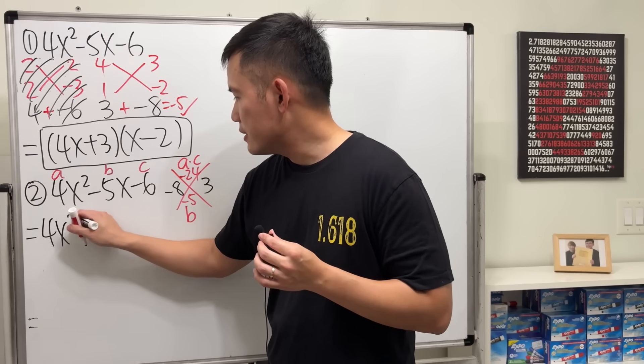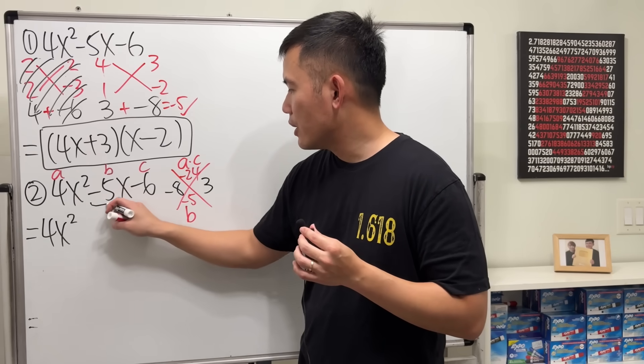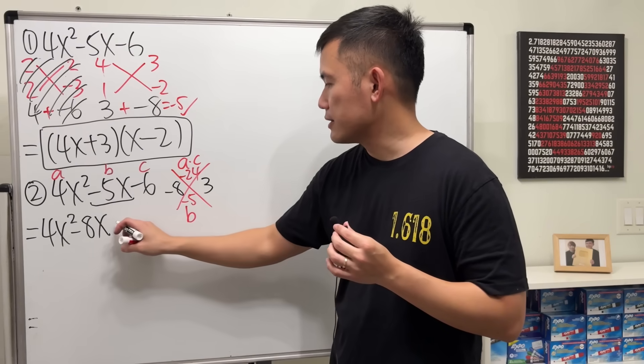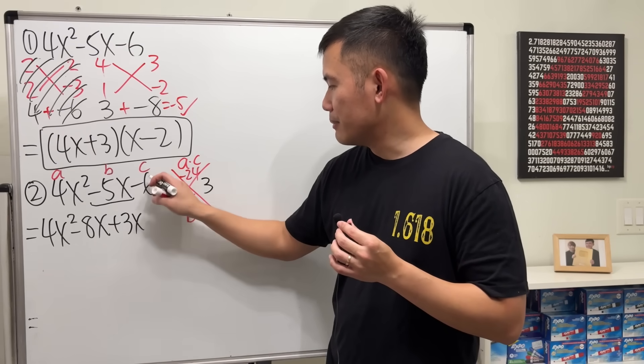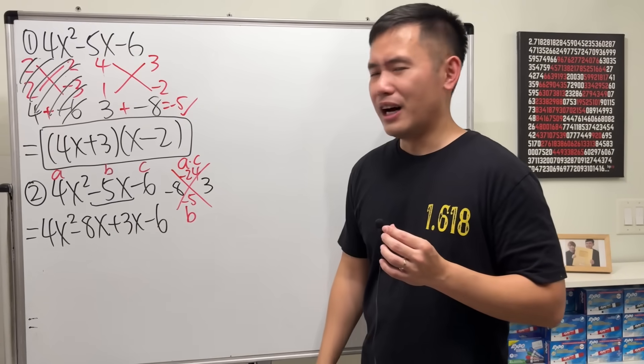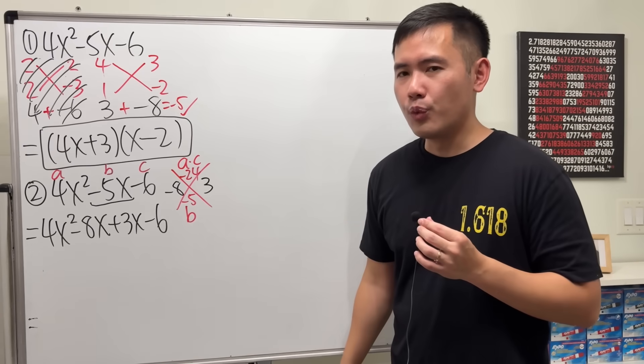The purpose of this right here is to break down the middle term. Have a look. We have 4x squared stays. But for this right here, we are going to write it as negative 8x and then plus 3x. And then minus 6. So, we have four terms now. Did I just make the problem worse?